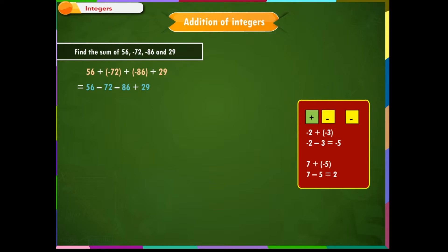Step 3: Solving from the left — 56 minus 72 gives minus 16. Bring down the rest of the integers. Now, minus 16 minus 86 gives minus 102. Bring down the last integer. Minus 102 plus 29 gives minus 73.